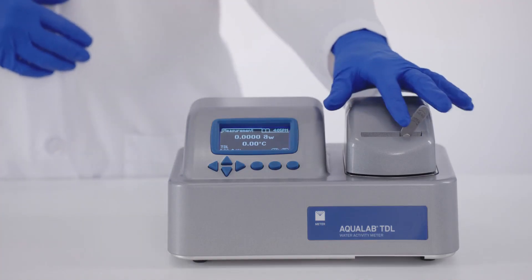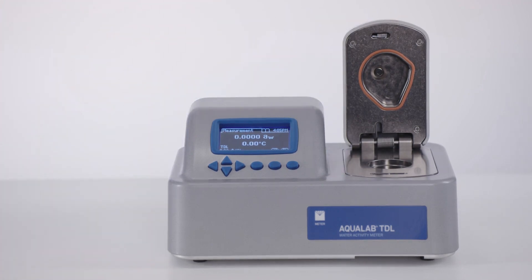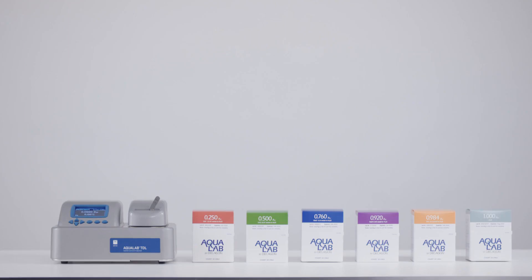If the sample chamber or sensors become contaminated, your instrument will not measure water activity correctly. The best way to check for contamination inside your instrument is by running verification standards at the beginning of every shift.